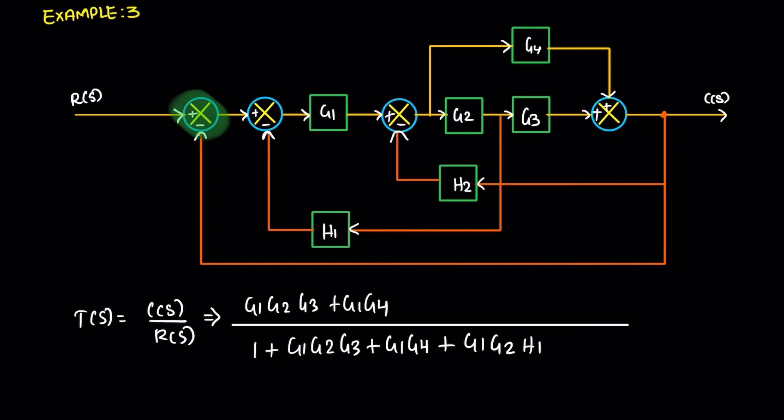Next, this path. Again, it is a negative feedback. The result is positive. So plus G1, G2, G3, then H2.